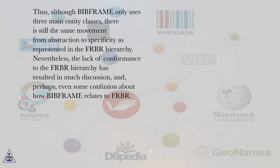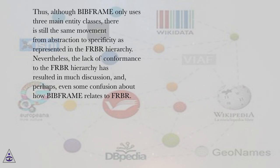Thus, although BIBFRAME only uses three main entity classes, there is still the same movement from abstraction to specificity as represented in the FRBR hierarchy. Nevertheless, the lack of conformance to the FRBR hierarchy has resulted in much discussion, and perhaps even some confusion about how BIBFRAME relates to FRBR.